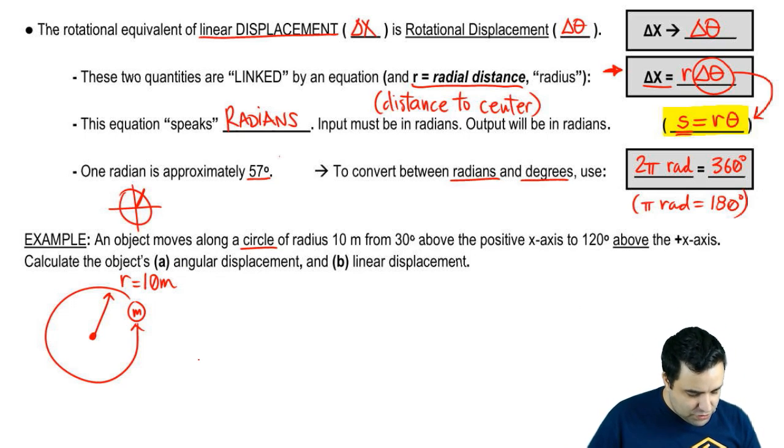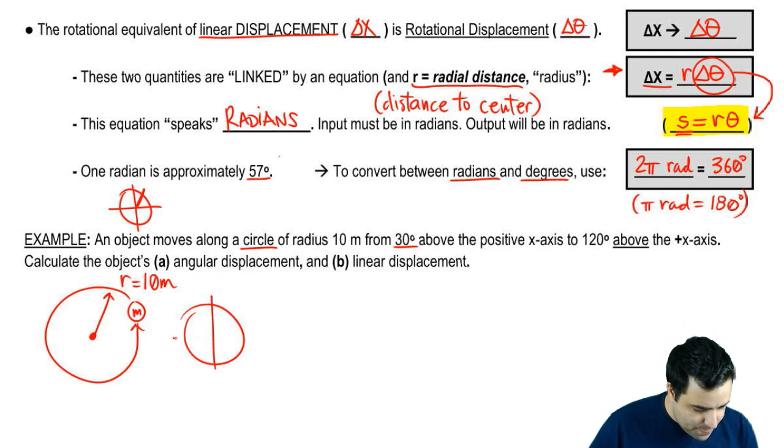And it says here that you start at 30 above the x-axis and then you go all the way to 120 above the x-axis. So let me draw another circle here just so I can put the angles. So 30 is somewhere here. You start here. And then remember this is 0, 30, this is 90. So 120 will be somewhere here. So you're going from something like this, from here to here.